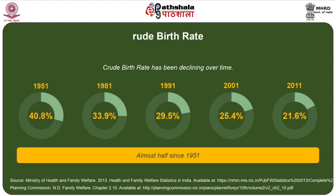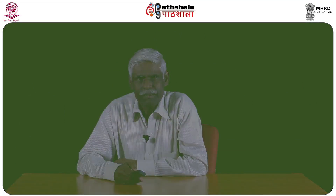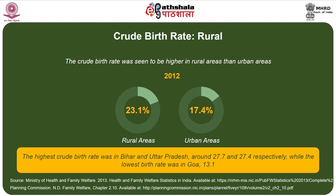Besides urbanization, two important components of population growth are birth rates and death rates. India's birth rate has shown a clear declining trend, from 40.8 births per 1000 population in 1951 to 21.6 per 1000 in 2012 — almost half. The crude birth rate remains relatively higher in rural areas at 23.1 compared to urban areas at 17.4 per 1000 population.